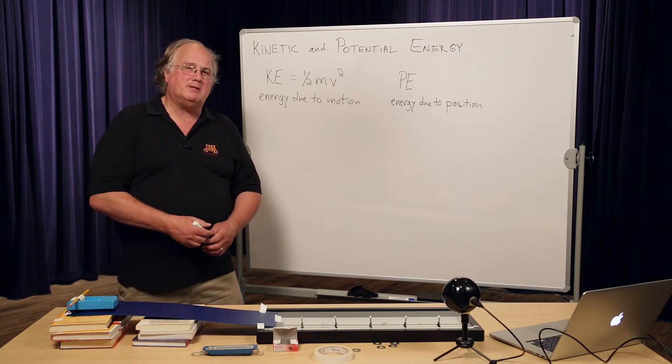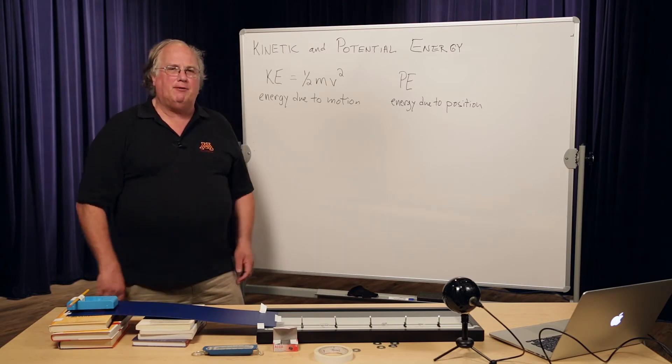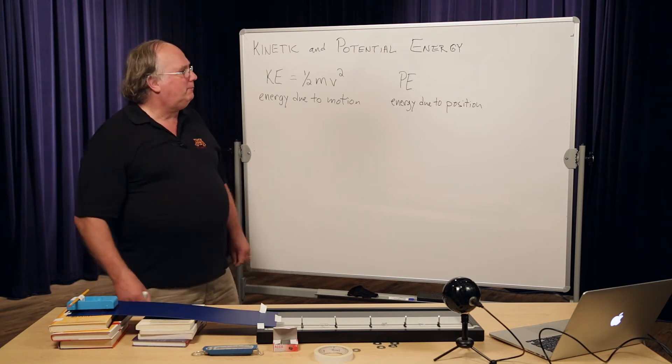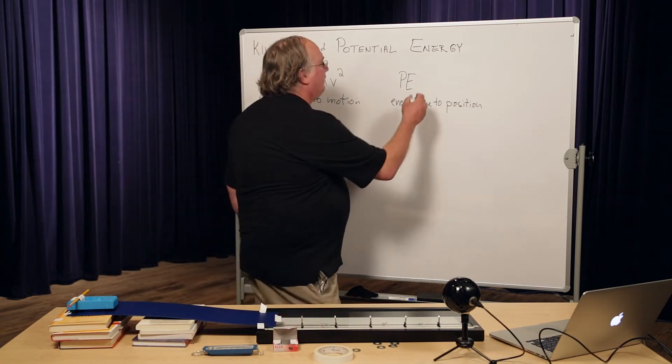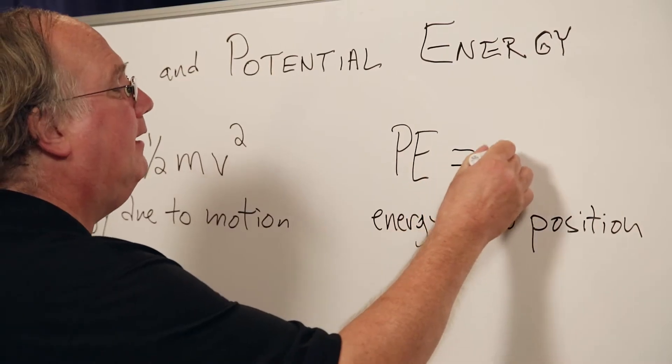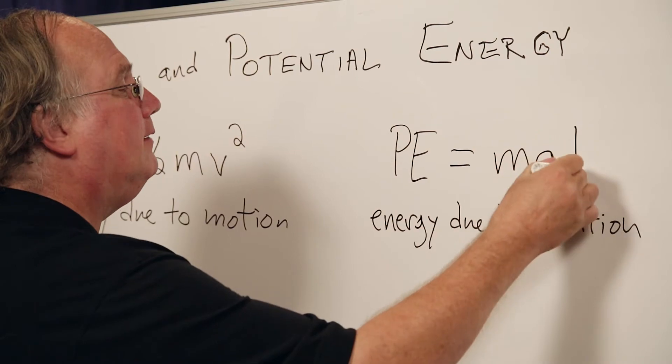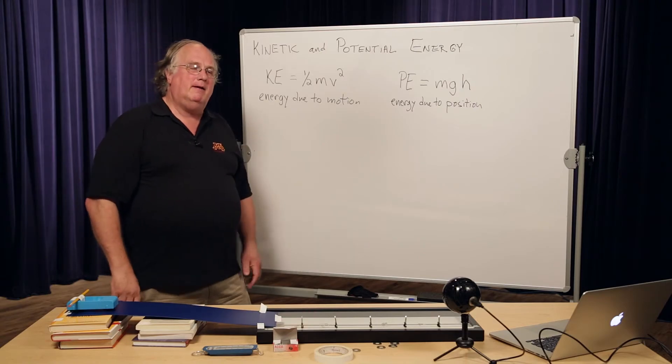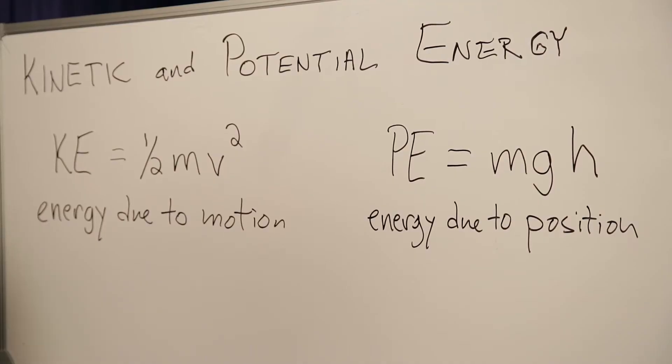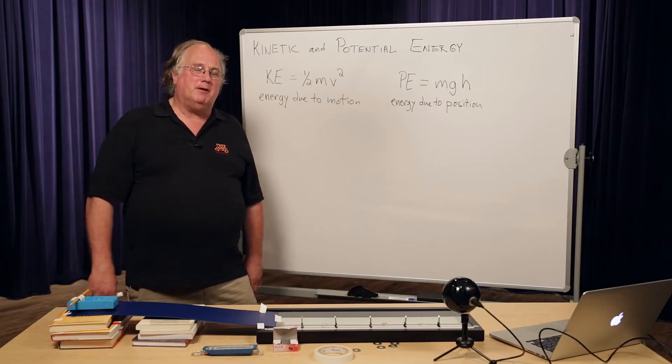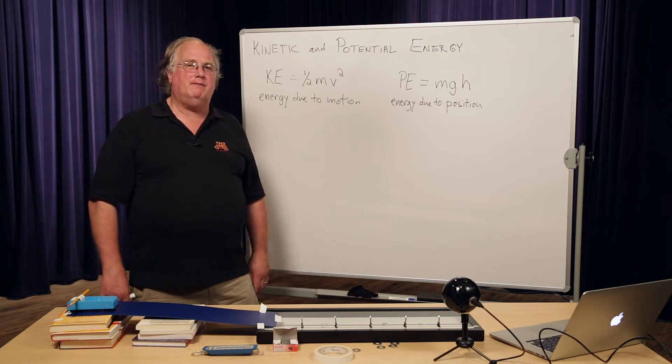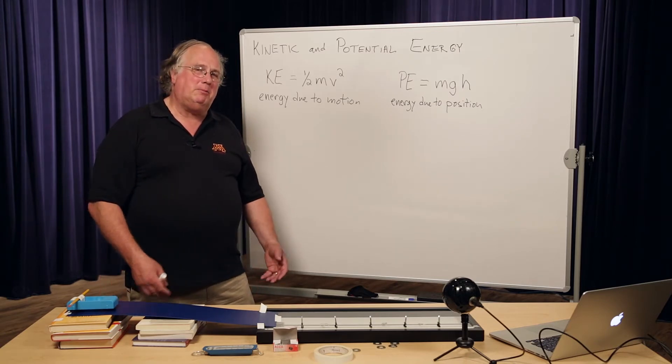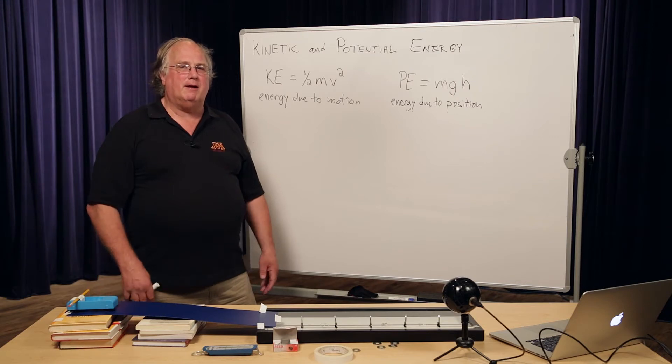The formula for potential energy depends on what's going on in the problem. What we're going to be using is good old lab gravity, and the formula for the potential energy due to lab gravity is M times G times the height. And when you see H, you should say, well, height relative to what? It turns out, as long as you're consistent, it doesn't matter where you put the zero of height. You put it somewhere that's convenient and measure relative to that, and as long as you always use that as the zero point, everything works out.